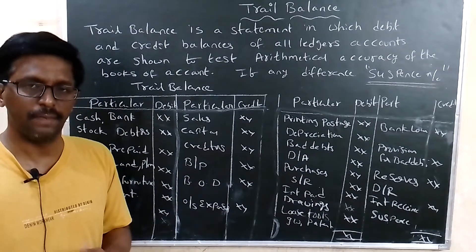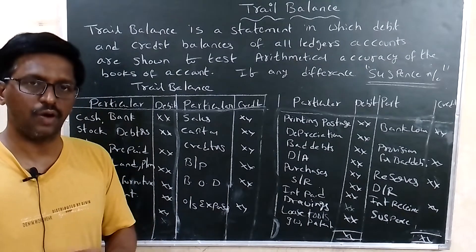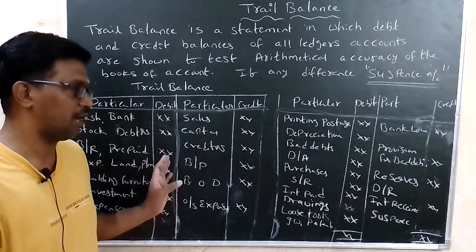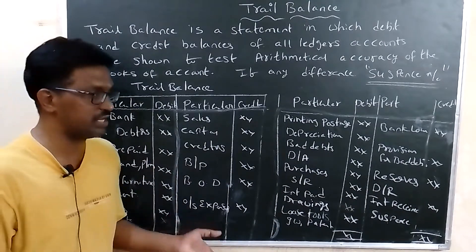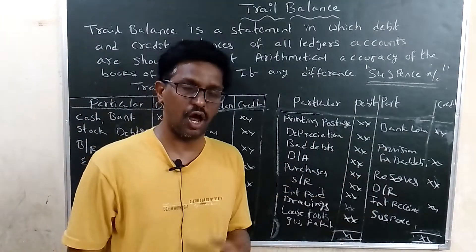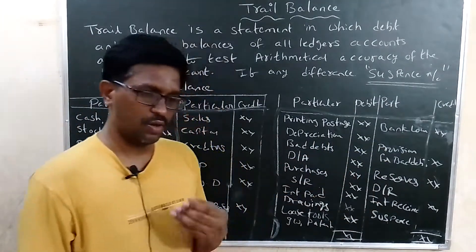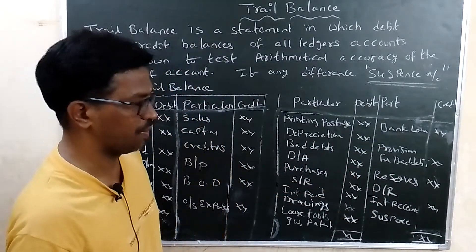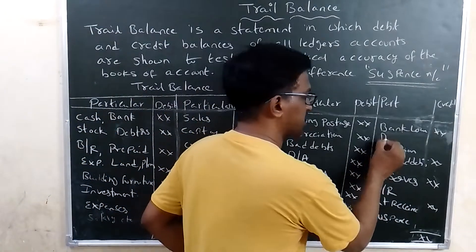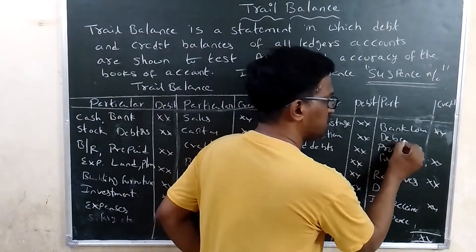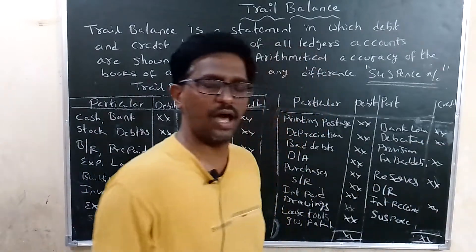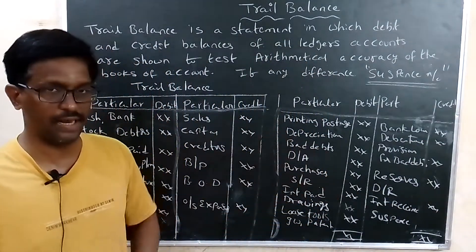Other credit side items include creditors, bills payable, bank overdraft, outstanding expenses. All liabilities are shown in the credit side. Provisions and reserves are also shown in the credit side. Long-term liabilities such as bank loans, debentures, mortgage loans, and loans from financial institutions all show credit balance.